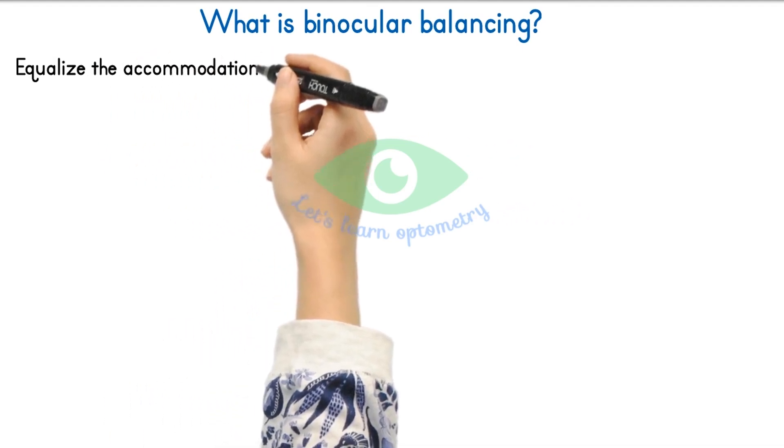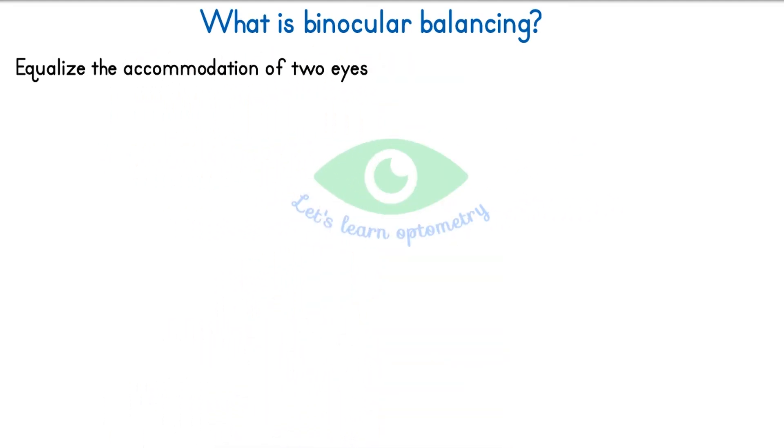Binocular balancing is a test done to equalize the accommodation of two eyes. But why do we have to do this test?